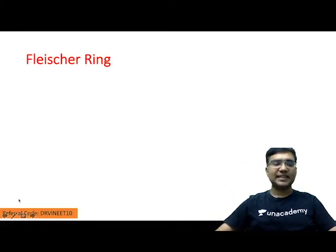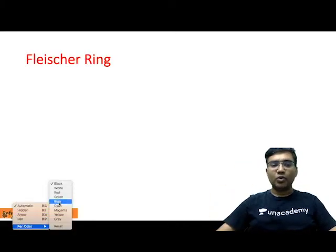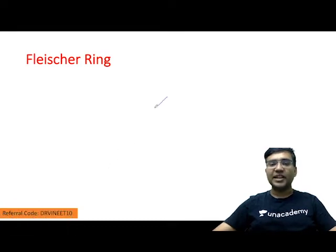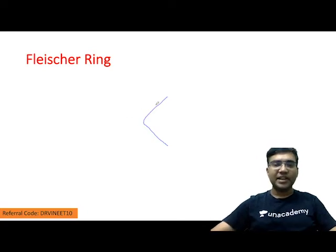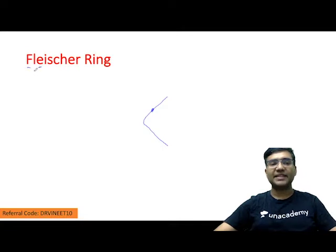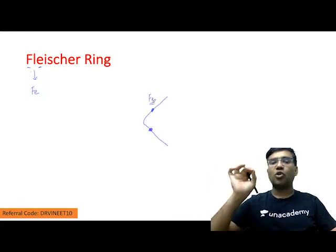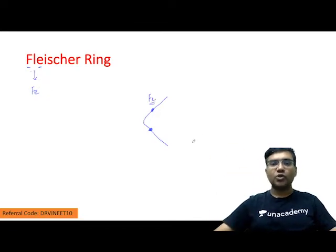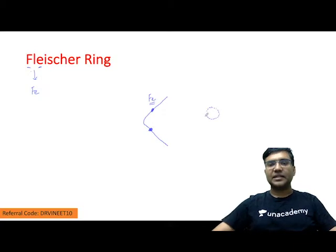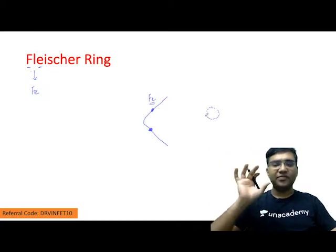The next thing is Fleischer ring. Do not confuse it with the KF ring seen in Wilson's disease. In Fleischer ring, F goes with iron — Fe is the symbol of iron. Fleischer ring is basically deposition of iron particles at the base of the cone of keratoconus, appearing as a line in the center of the cornea.